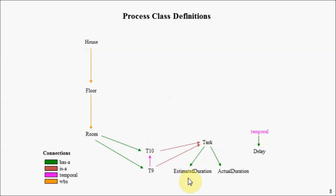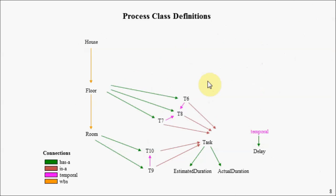Similarly, we're going to connect T10 as a 'has a' property of room. So now we've defined a room. We will do something similar with defining a floor, and continuing, do something similar with defining the tasks associated with the entity called a house.